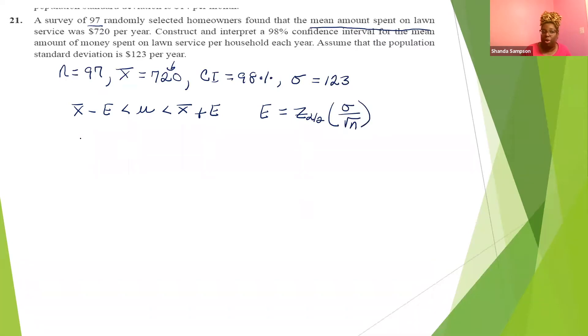So we have our x bar, 720 minus E is less than mu is less than 720 plus E for whatever we get with E. Now I'm going to work on E. Thing we need for E right away is Z alpha over two. So how do we find alpha? Recall alpha is one minus C. Alpha is equal to one minus 0.98, which is 0.02. But we're not looking for alpha here, we're looking for alpha over two. So alpha over two equals 0.02 divided by two, that's 0.01.